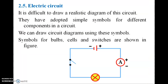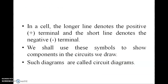In circuit diagrams, simple symbols are used for different components. We can draw a circuit diagram using these symbols, which include symbols for bulbs, cells, and switches. In a cell symbol, the longer line denotes the positive terminal and the shorter line denotes the negative terminal.